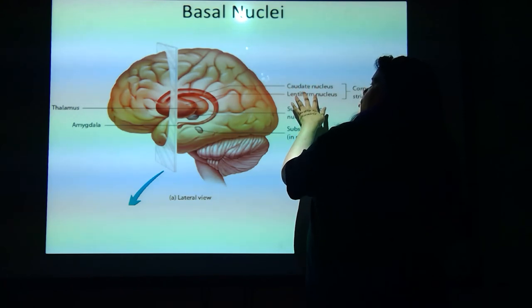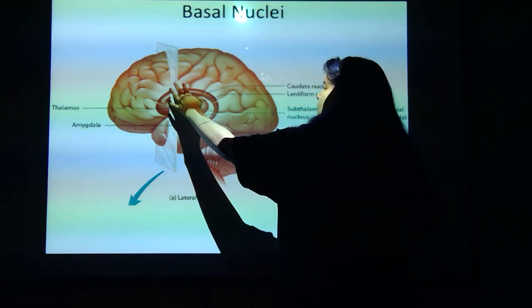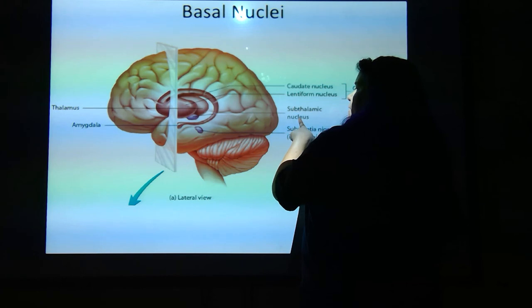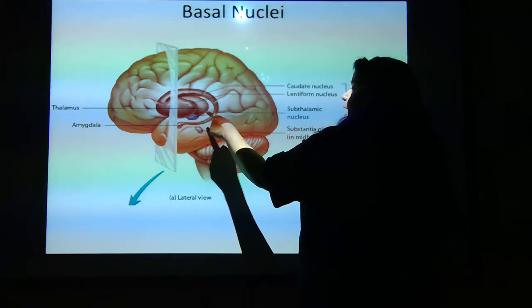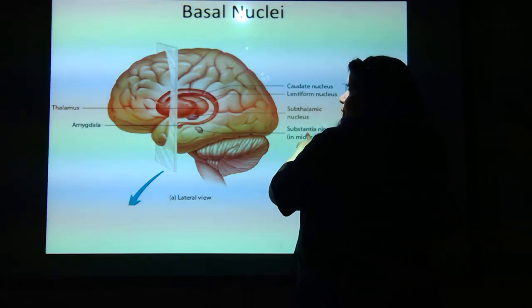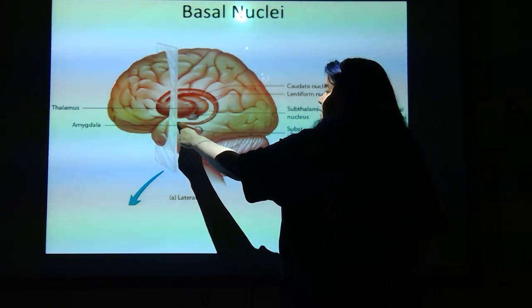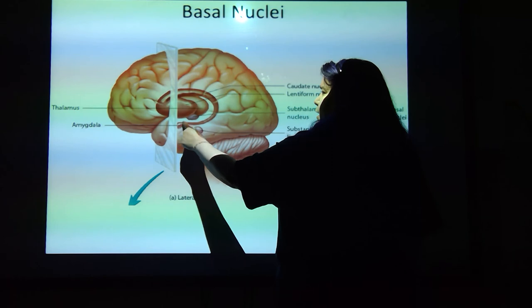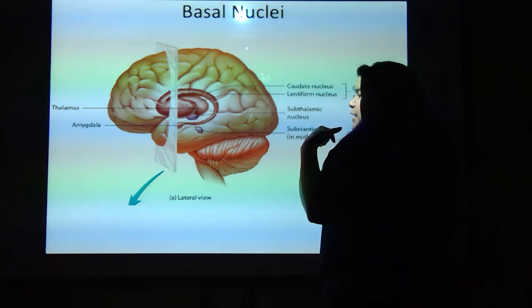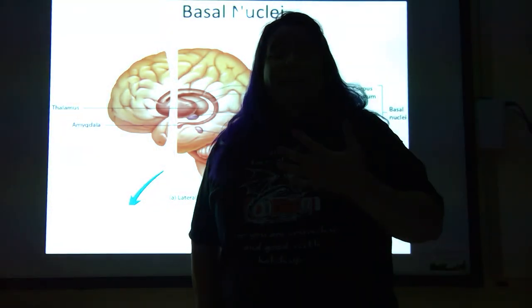Up here are two really huge nuclei. Right below is the subthalamic nucleus. And down here is the substantia nigra — this is actually part of the midbrain. The amygdala is right here, near where the thalamus would be. The amygdala is part of our emotional brain — this is the part responsible for self-preservation, the part that makes us stop and go, 'Is this a good idea?' We're going to stop there and start with part two in a second.